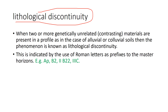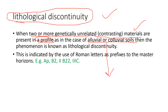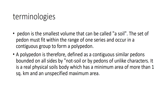Lithological discontinuity refers to a combination of two or more genetically unrelated materials present in a soil profile. An example is alluvial or colluvial soils, where two genetically unrelated soils mix together. It is indicated by Roman numeral letters as prefixes to the master horizon. Although not the most critical exam topic, it can form part of essay-type questions, so knowing the key definition is useful.